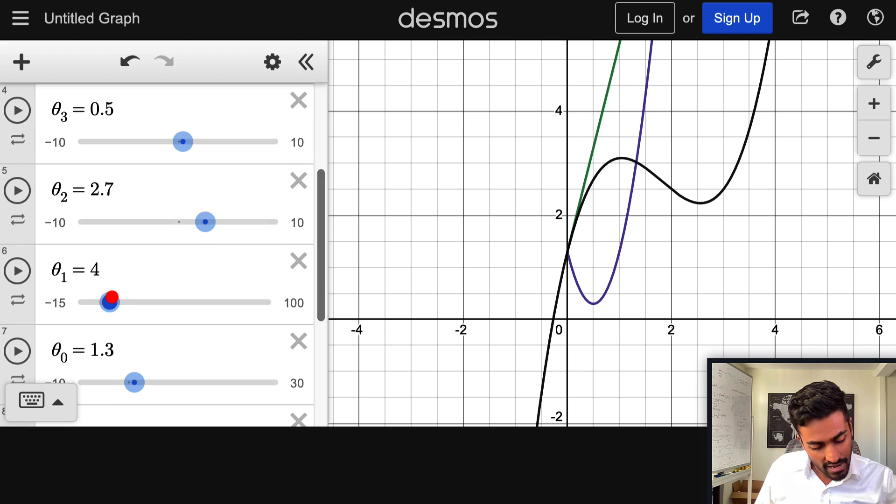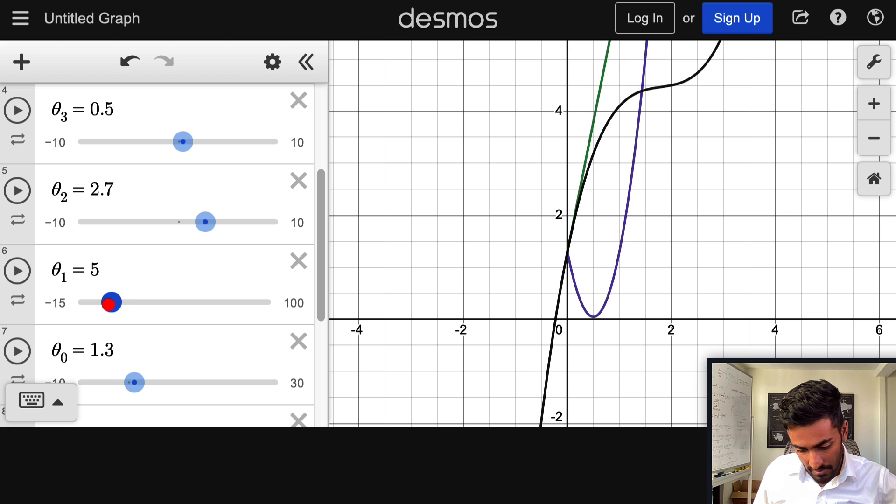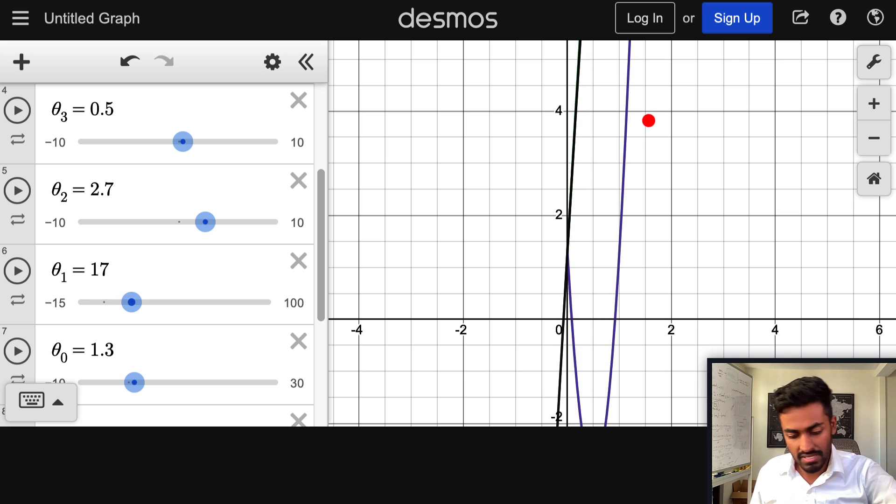Also if you kind of increase the value of these parameters let's say we increase a little bit you can see that the slopes of all of these lines are now so much higher which means that small changes in the x direction leads to larger changes in the y direction and this causes the high variance issue that we see that kind of defines overfitting.